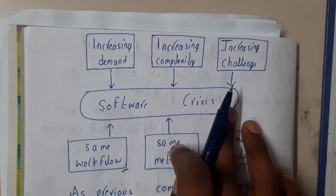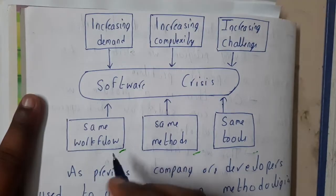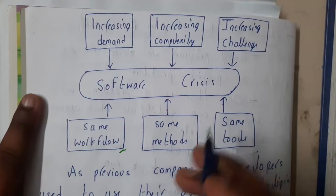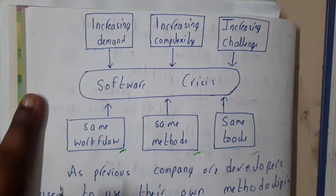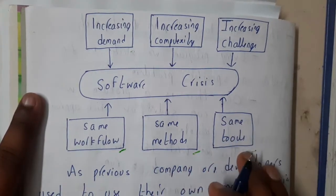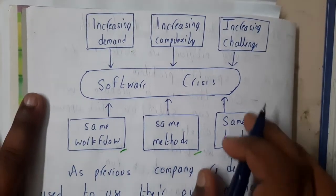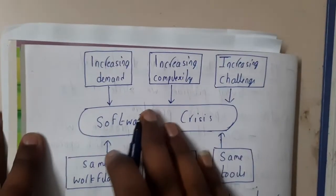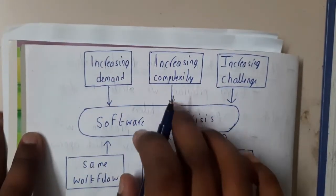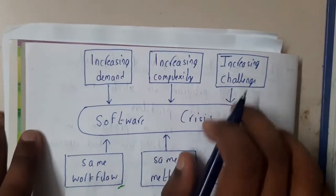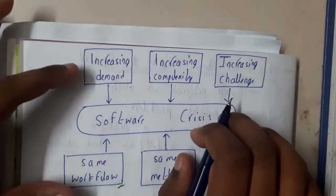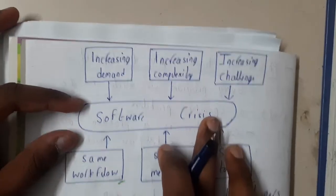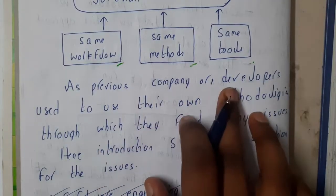They kept following the same workflow, using the same methods and old-version tools from before. Slowly, demand increased, complexity increased, and the challenges increased — and at the end, they ended up with a software crisis.